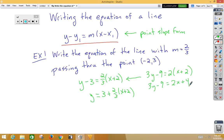Then 3y minus 9 is 2x plus 4. And then we could have 2x minus 3y is equal to negative 13. It's also possible we could write that in y equals mx plus b form.